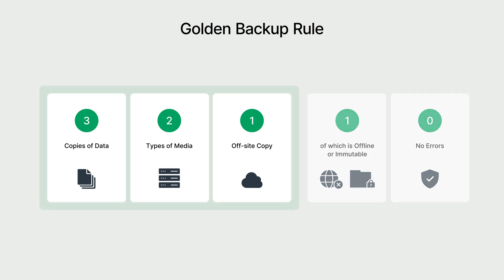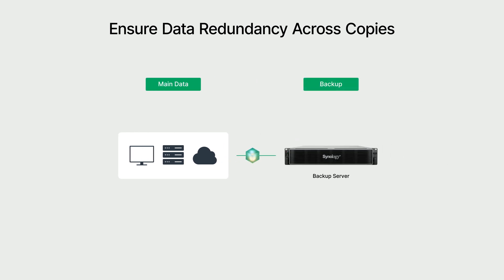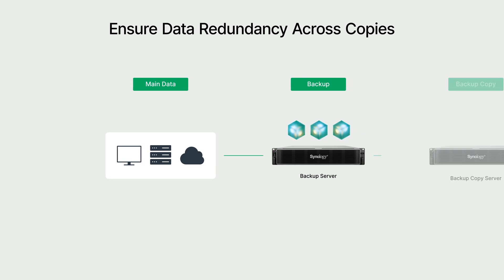The 3-2-1 part of this rule is the foundation of every effective backup plan. Let's see how Active Protect applies it in action. Meeting the 3-2-1 rule means keeping your backup copies on separate devices and in different locations. Data from your production environment is first backed up to an Active Protect appliance.